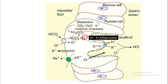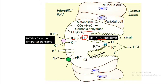The HCO3− ion exits the parietal cell in exchange for Cl− via the HCO3−/Cl− active antiporter transport. This HCO3− ion then goes into the blood vessels, which is responsible for postprandial alkaline tide as well as alkaline urine.